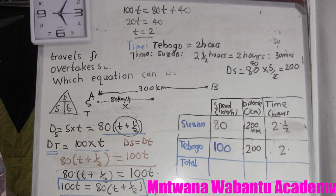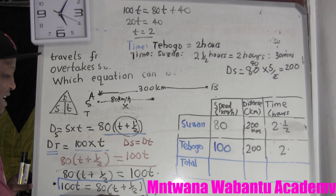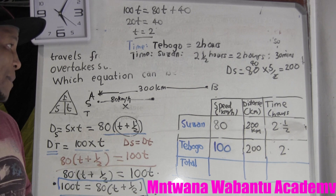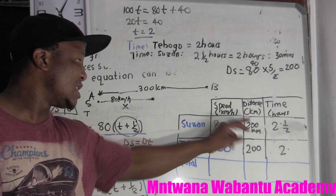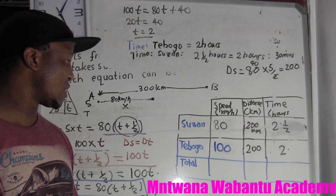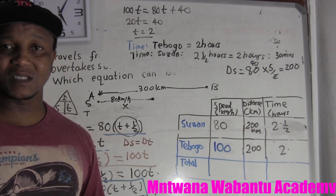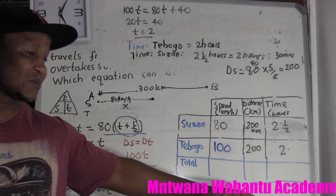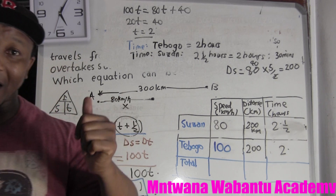According to the question, this was the equation needed to solve for T. But in a written exam, they'll also ask you to find the distance covered by Susan and Teboho. Just like I showed here. Make sure you subscribe and share this video. Bye and peace!